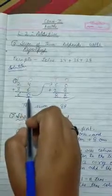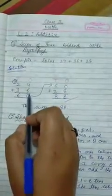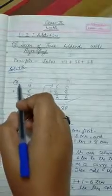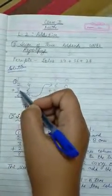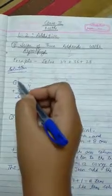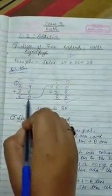So 6 plus 4 is equal to 10. Then we will put 0 in ones place and carry to tens place. Then 2 plus 3 is 5 and carry 1 is 6. So we add 2 addends and here we will get 60.